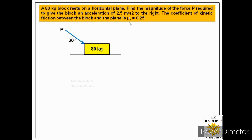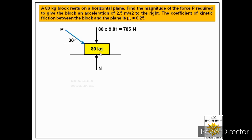The first step is to construct the free body diagram. We draw the block on a horizontal surface with the force P at an angle of 30 degrees to the horizontal. We label the weight of the block acting in the downward direction. The mass gives us a weight of 80 × 9.81 = 785 newtons. We then label the normal pressure acting normal to the surface.